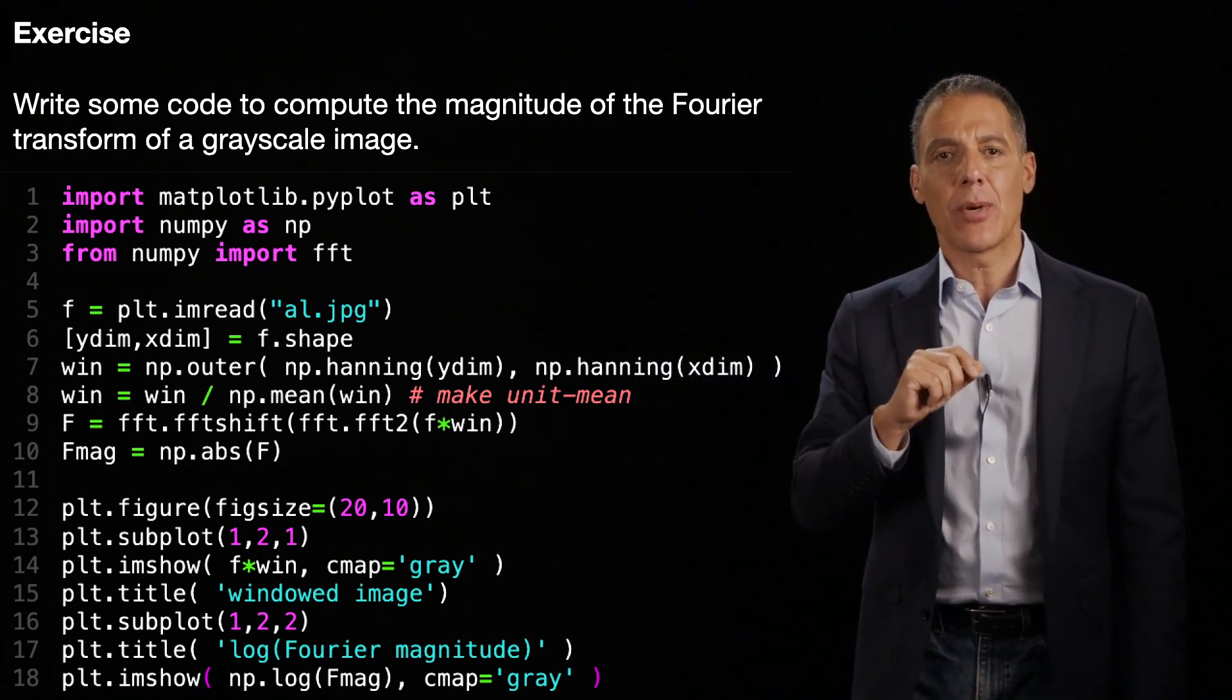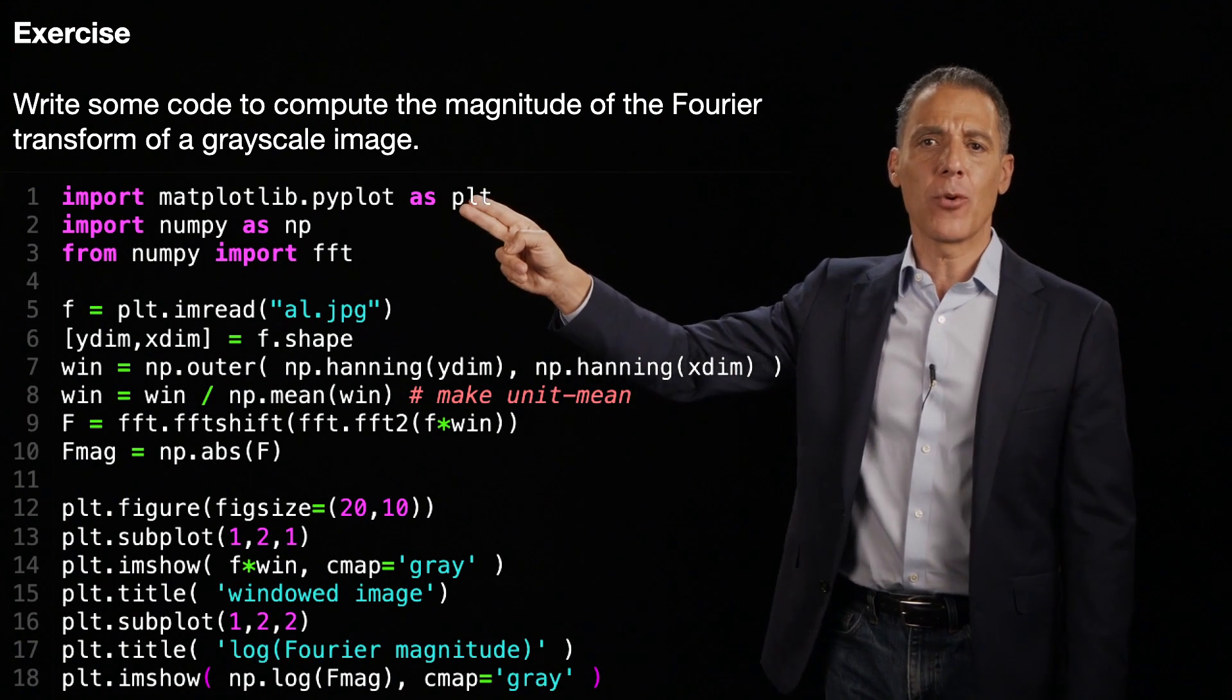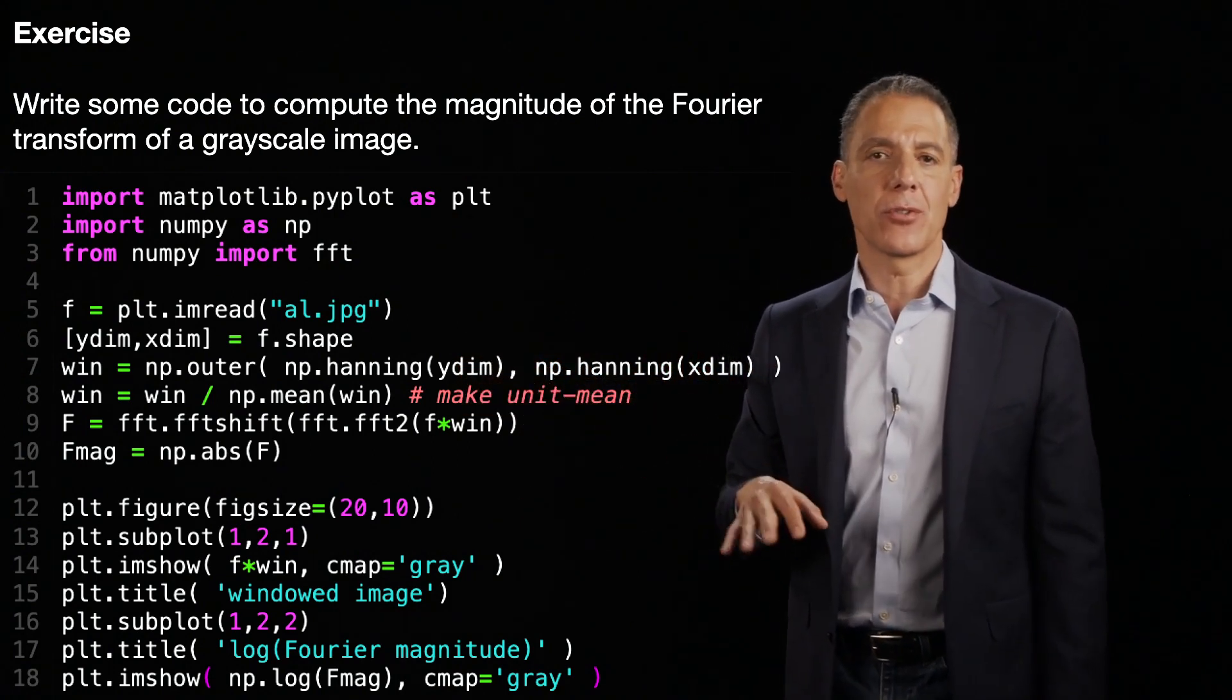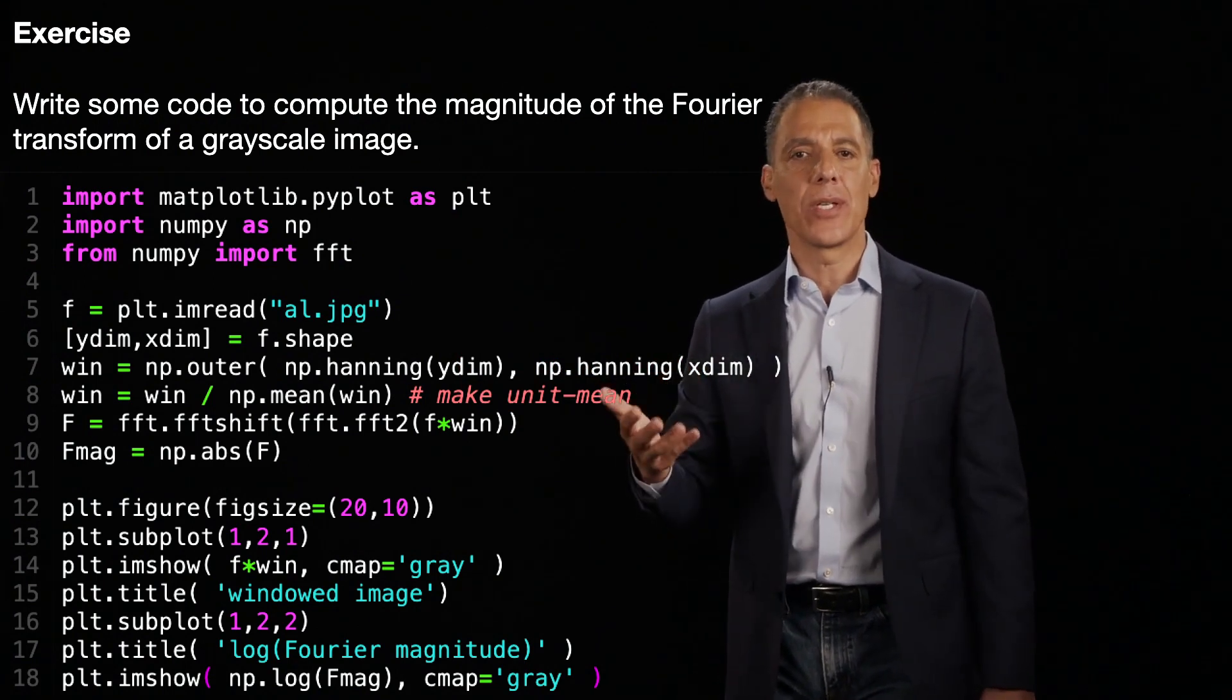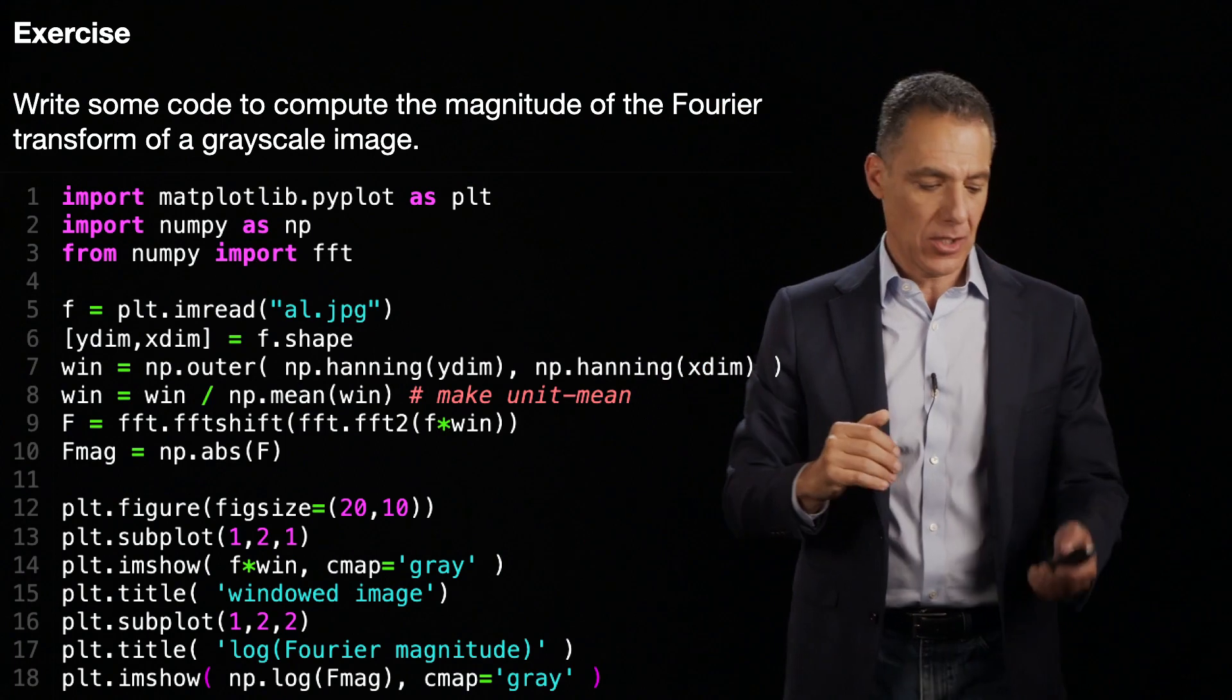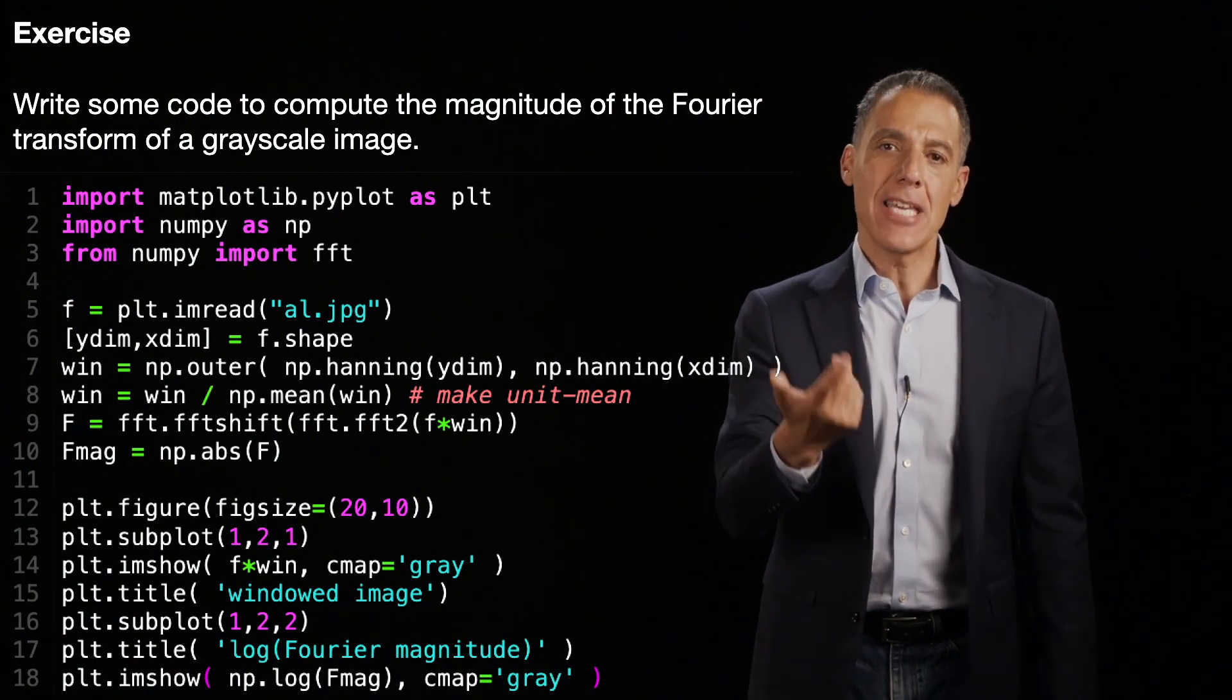And so practically what you have to do is you have to force your signal or your image to be periodic. And that's this version right here. So let's go through it. Same thing as before, import some libraries, load the image in. And now what I'm going to do is create what's called a Hanning window. There are many, many different types of windows you can do. You can do a Hamming window, a Hanning window, a Gaussian window. There's lots and lots of windows. And all they do is they have a value of one near the center of the image and fall off to zero by the edges.